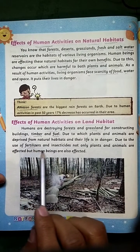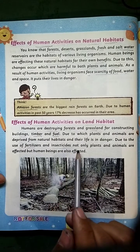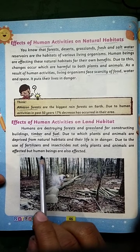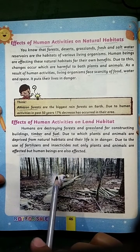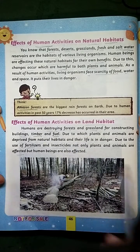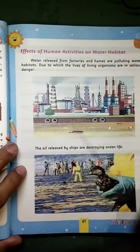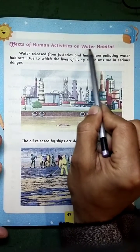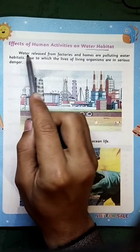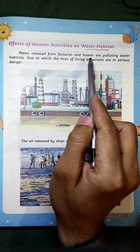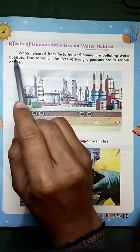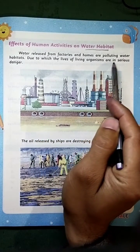Due to the use of fertilizers and insecticides, not only plants and animals are affected, but human beings are also affected. Effects of human activities on water habitats: homes and gardens are polluting water, due to which the lives of living organisms are in serious danger.